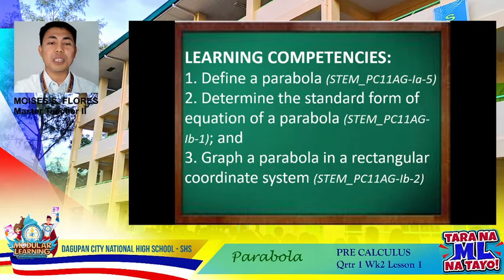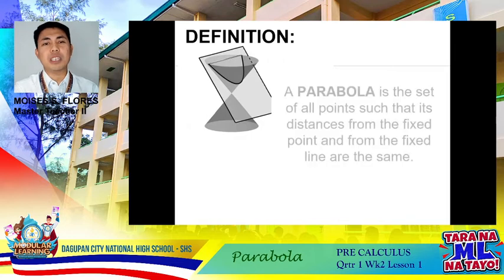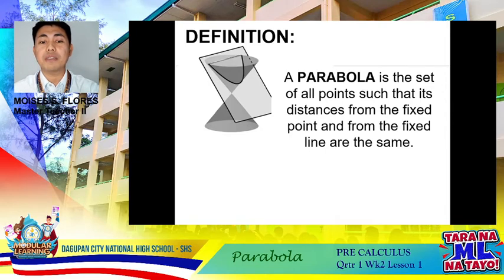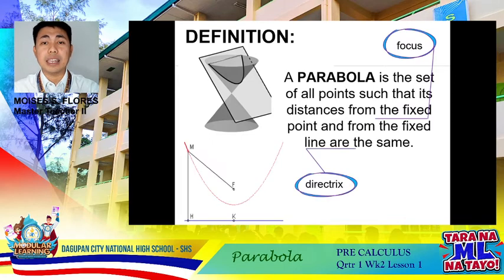Let's proceed with the very first competency: we are going to define a parabola. A parabola is said to be a set of all points such that its distances from the fixed point and from the fixed line are the same. This fixed point is called the focus. On the other hand, the fixed line is called the directrix.